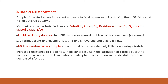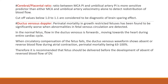In the middle cerebral artery Doppler, a normal fetus has relatively little flow during diastole. When there is increased resistance to blood flow in the placenta, redistribution of cardiac output favors cardiac and cerebral circulations, leading to increased diastolic flow in the MCA and a decreased S/D ratio. The ratio between middle cerebral artery and umbilical artery is a more sensitive predictor than either MCA or umbilical artery velocimetry alone in detecting redistribution of blood flow.